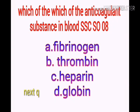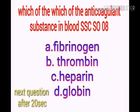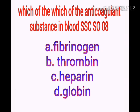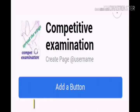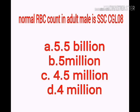Which of the following is an anti-coagulant substance in blood? Options: a) fibrinogen, b) thrombovin, c) heparin, d) globin. Your answer is heparin.